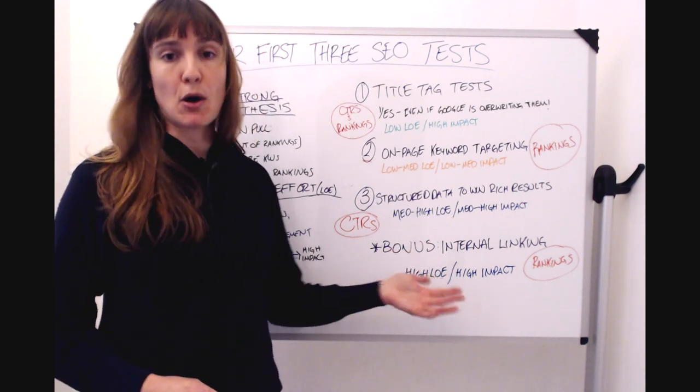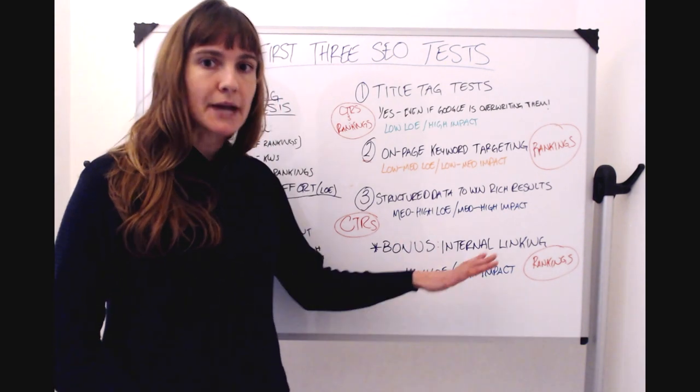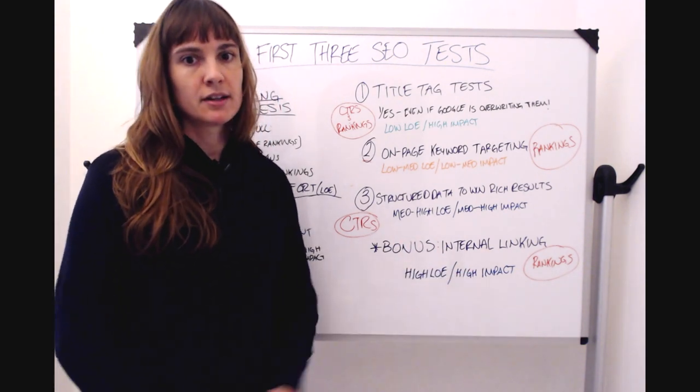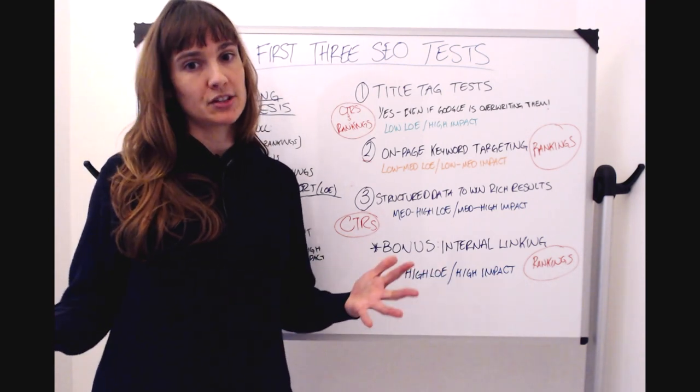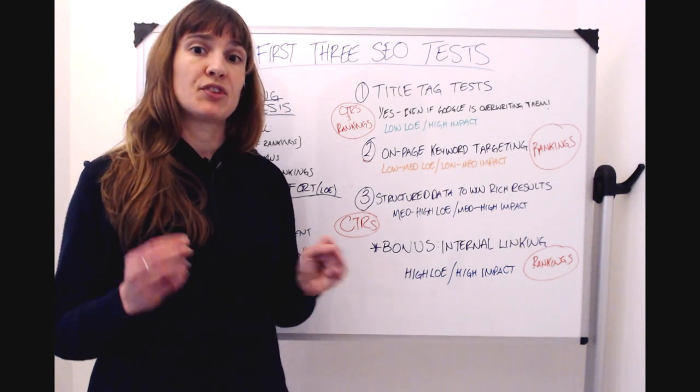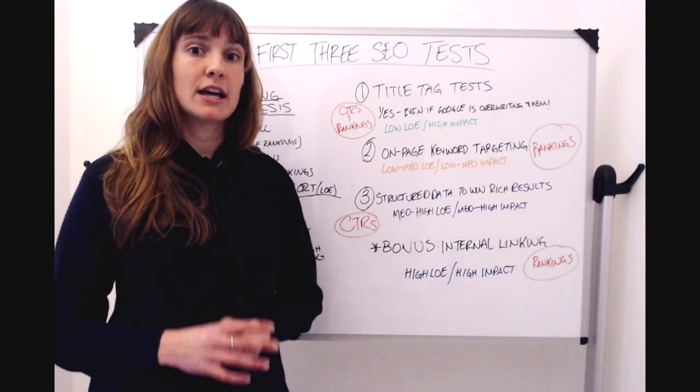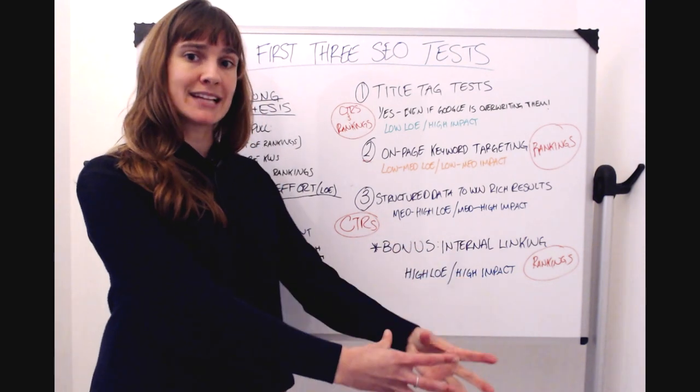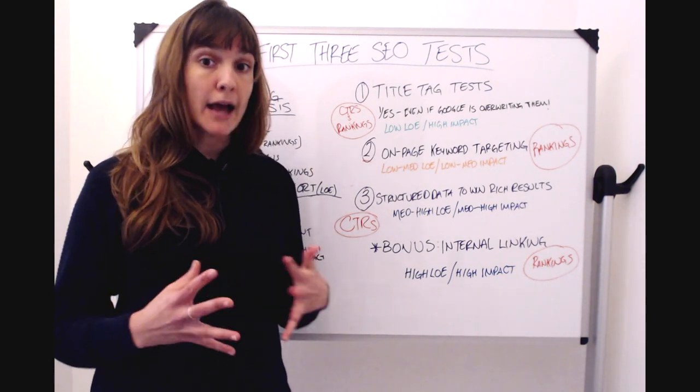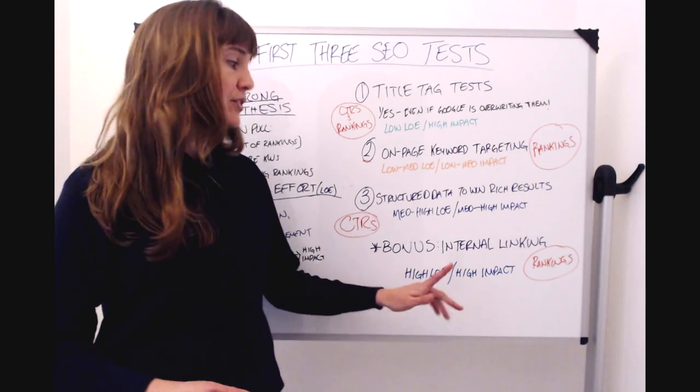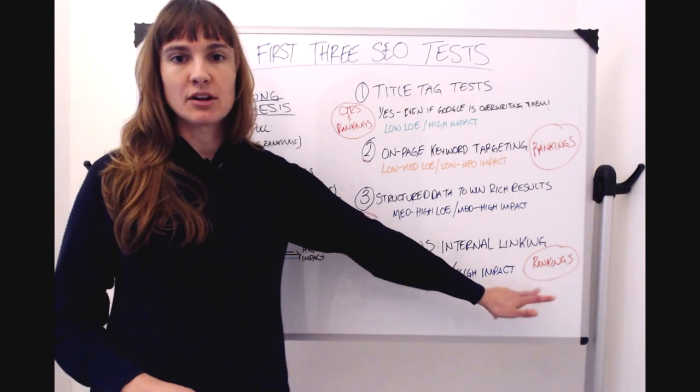For example, I've put a bonus on here, internal linking tests. These fall into that quadrant that are high impact, high level of effort. Internal linking tests are high level of effort, not only because you need engineering resource oftentimes to implement them, it's also really difficult to figure out the measurement for these tests. That's because we're changing two different pages. We're going to expect to see an impact on the pages where we're adding the links. We're also going to expect to see an impact on the pages that are receiving a link, but these cause big wins for SEO. So we definitely want to plan these tests in, but not one of your first three tests. These are going to be targeting your rankings.